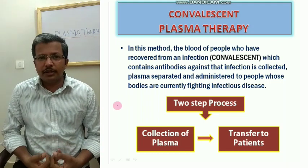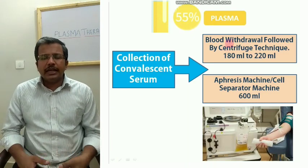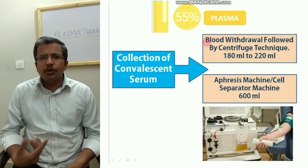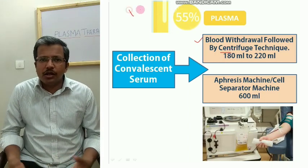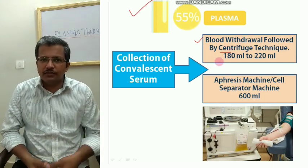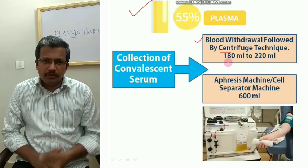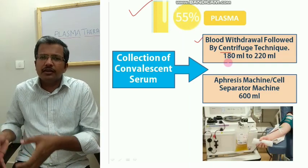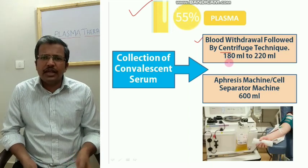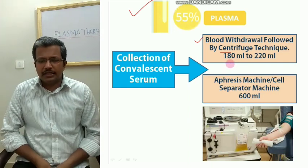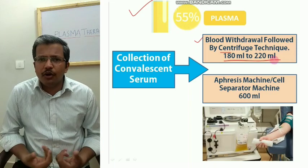Now the question is how you can collect the plasma. There are two possibilities. The first method involves collecting blood from the donor and centrifuging it, where the plasma separates as a pale yellow fluid at the top and can be collected. However, the drawback is that you are wasting the remaining components — RBC, WBC, and platelets — and you will only obtain about 180 to 220 ml of plasma.